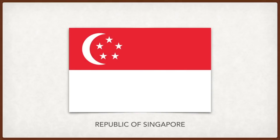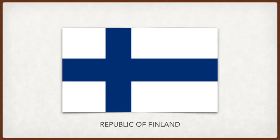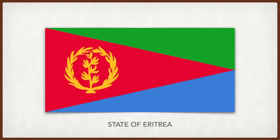Finland: the white is for the snow of Finland and blue for its lakes. Eritrea: the blue originally honored the United Nations which helped it gain its independence, the green stands for the agriculture and livestock, the blue stands for the sea, and the red is for the blood lost in the fight for freedom. The vertical olive branch encircled by the olive wreath stands for peace.